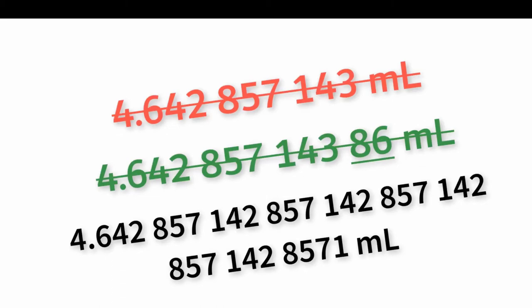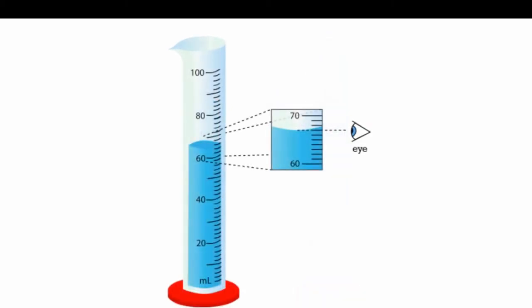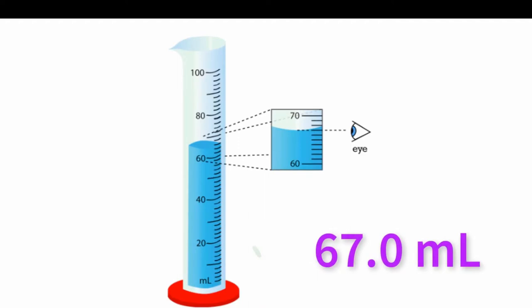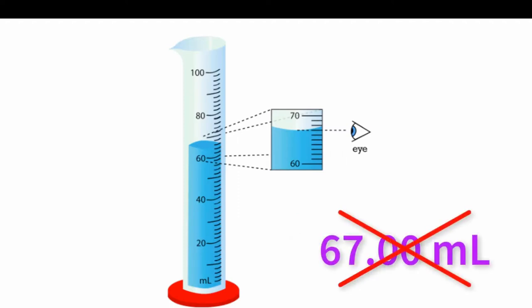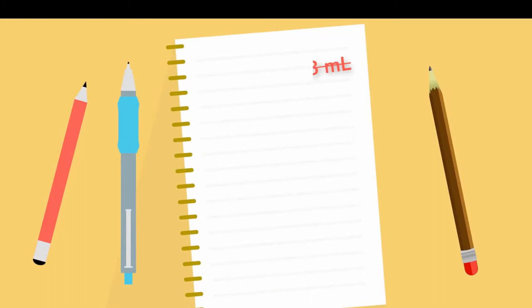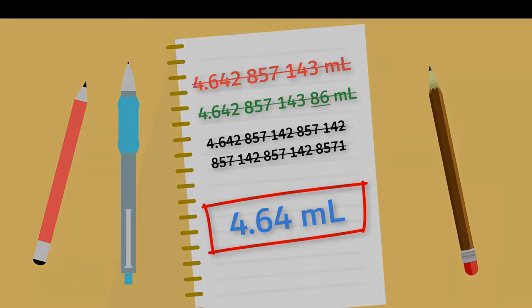Most students assume that more digits represent a more accurate representation. The problem is that when you use many digits, you're telling the reader that you have used instrumentation accurate enough to measure each precise amount. In this case, the starting amount was 32.5 milliliters — only precise to three significant digits. Reporting a number accurate to a million trillion trillionth of a milliliter falsely claims a precision that cannot be true. That's one reason why we use significant figures in the real world.